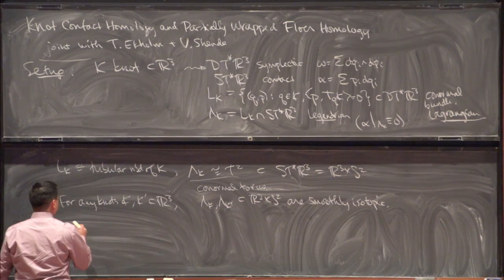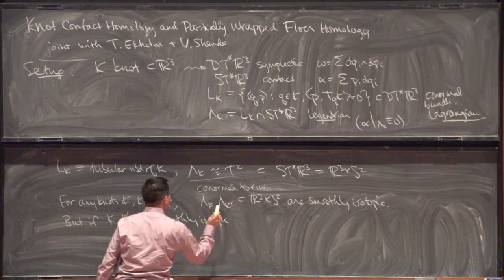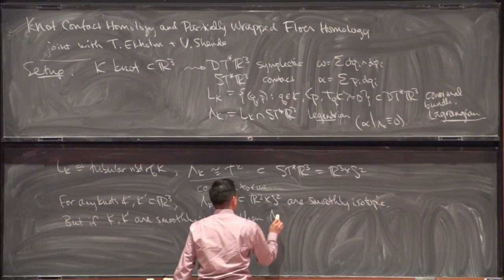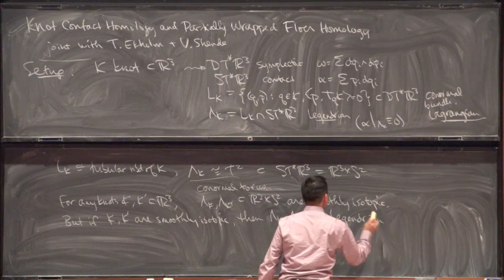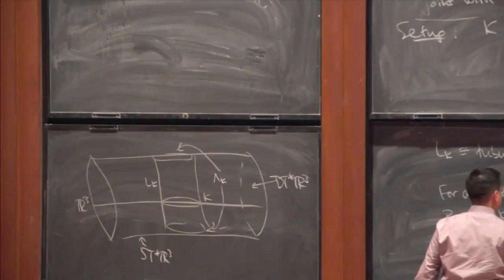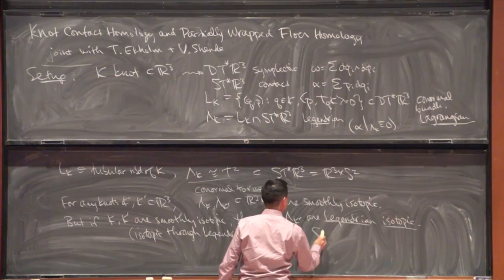But we can say more: if K and K' are actually smoothly isotopic — they're actually the same knot — then their conormal tori are not just smoothly isotopic, but actually Legendrian isotopic, i.e., isotopic through Legendrian submanifolds in this contact five-manifold.